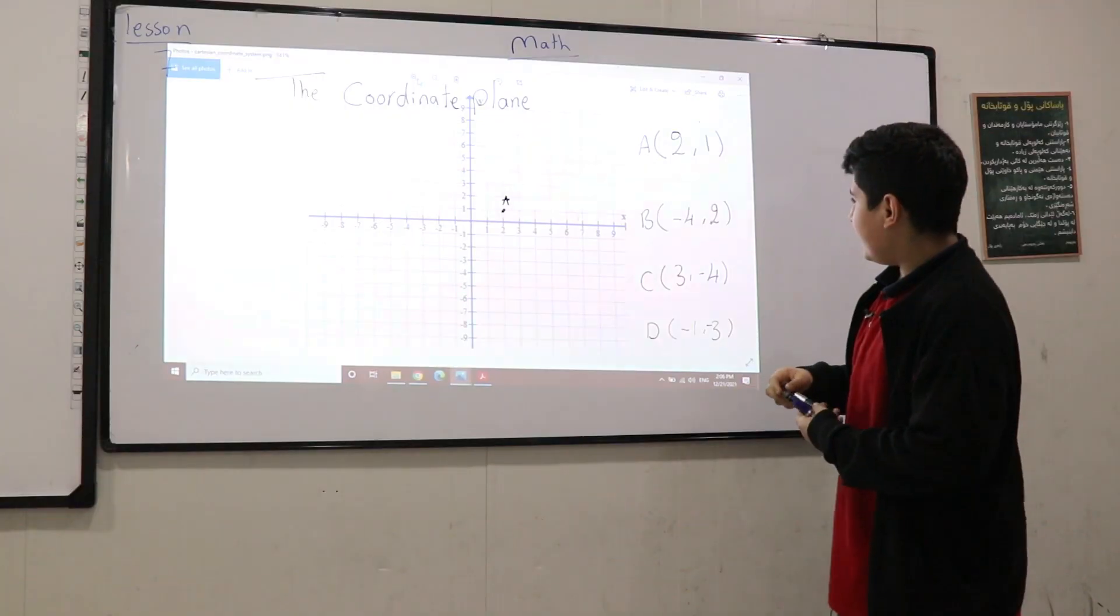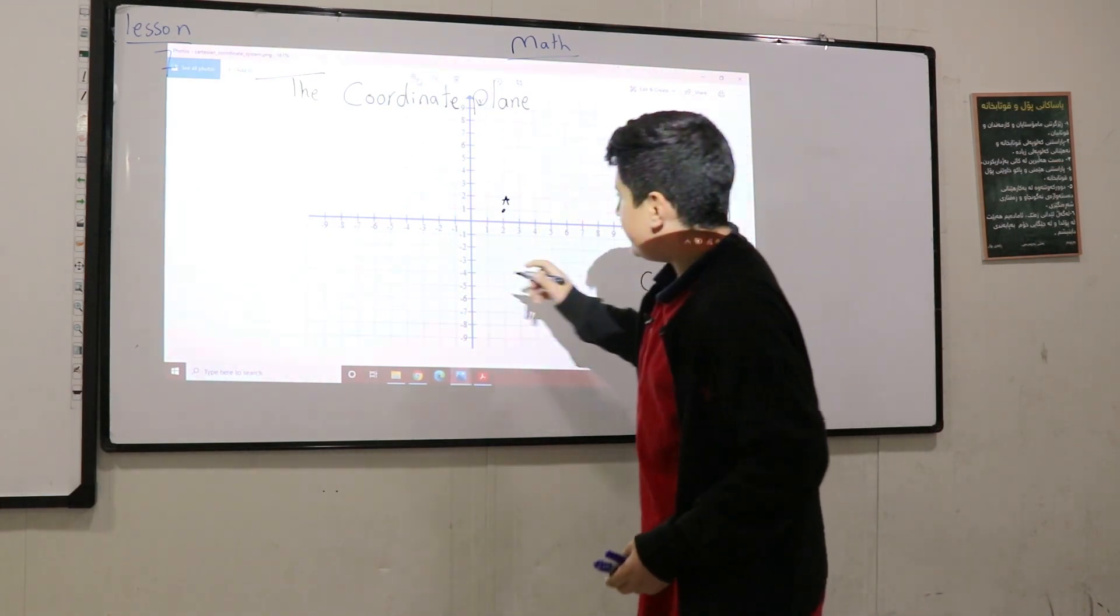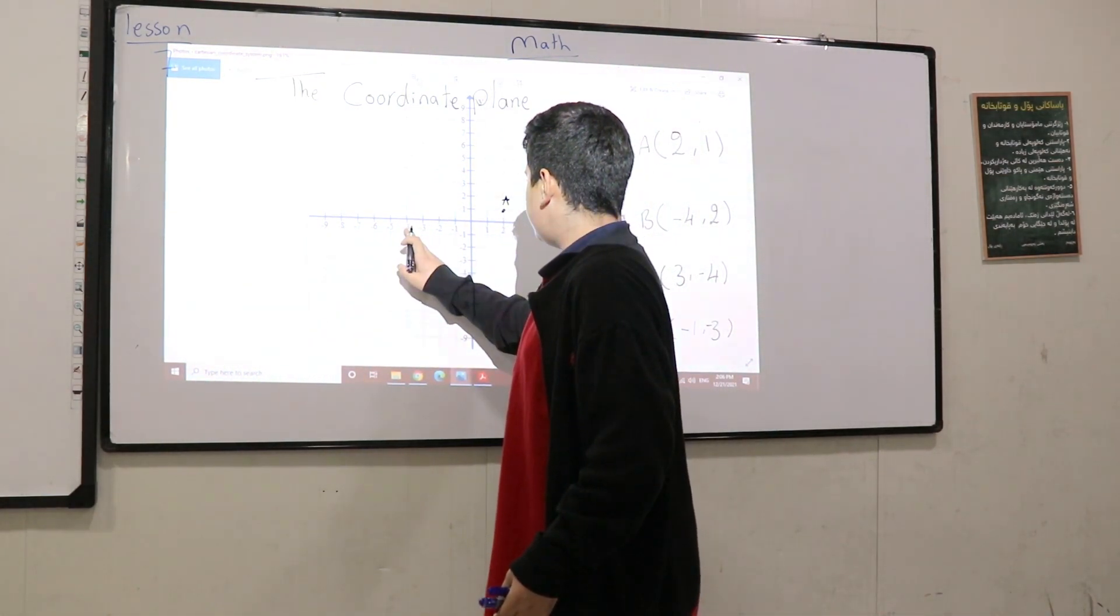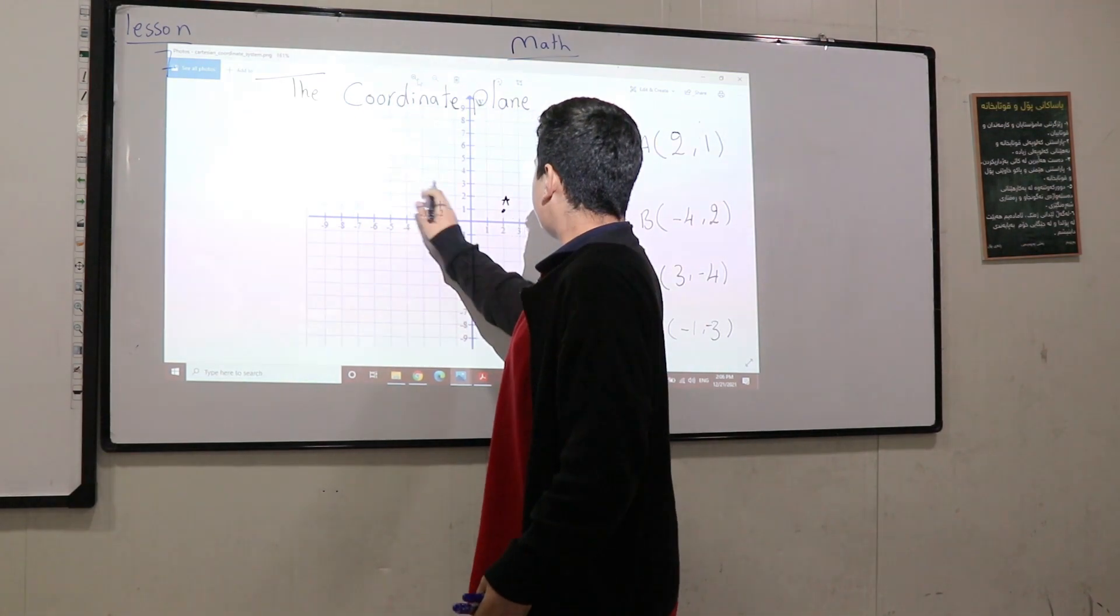And we have B, negative 4 and 2. Negative 4 and 2.